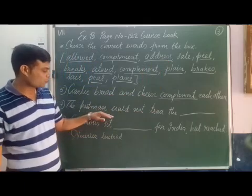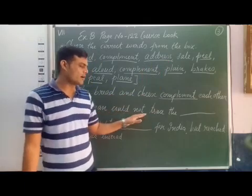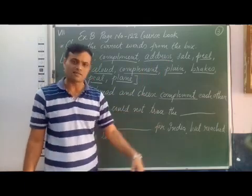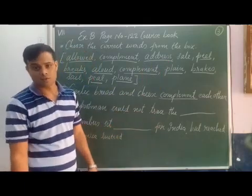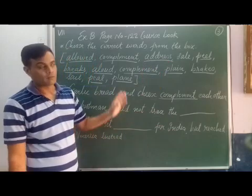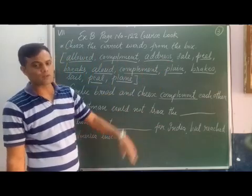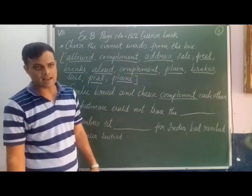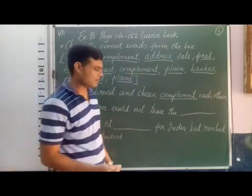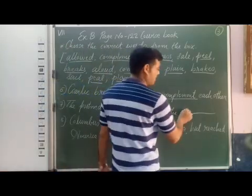Next: The postman could not trace the address. When we read these words, we get the answer 'address.' This time the meaning of address is the location — where someone lives or a place. So the postman could not trace the address.